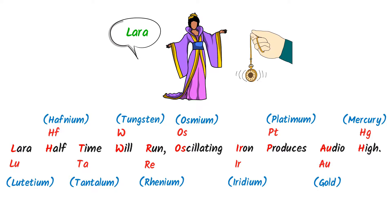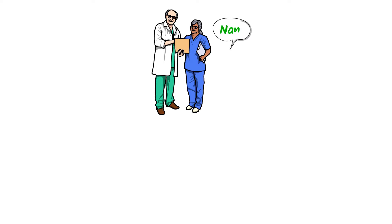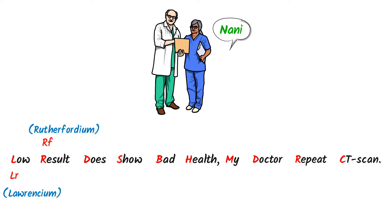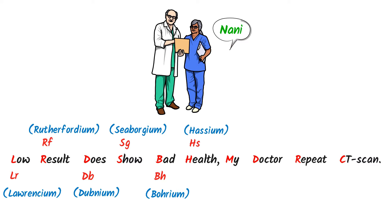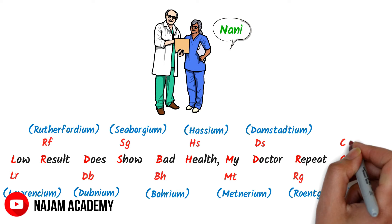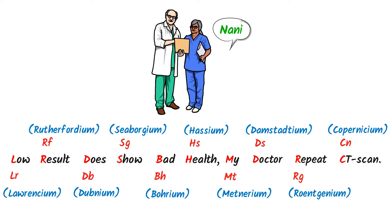Fourthly, consider your old grandmother who is very sick. She says: low result does show bad health. My doctor repeats CT scan. Here, Lr stands for Lawrencium, Rf stands for Rutherfordium, Db stands for Dubnium, Sg stands for Seaborgium, Bh stands for Bohrium, Hs stands for Hassium, Mt stands for Meitnerium, Ds stands for Darmstadtium, Rg stands for Roentgenium, Cn stands for Copernicium. This is the fourth column of transition elements.